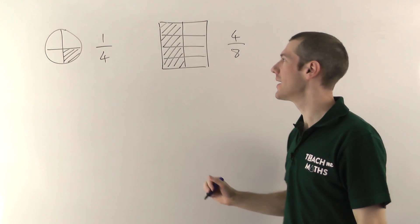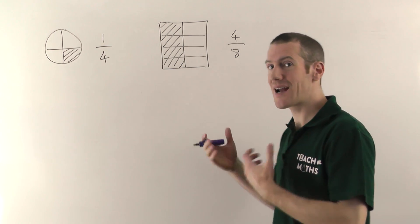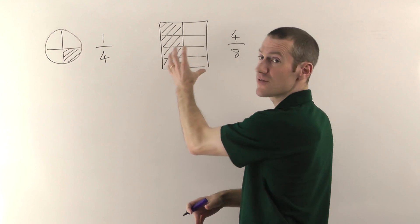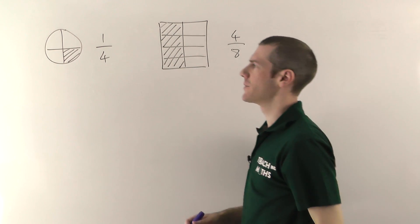I've actually got half of this shape here, and it's possible to write fractions in many different ways. You can take exactly the same fraction, exactly the same amount of stuff, and write it with different numbers on the top and the bottom. Let me explain what I mean.